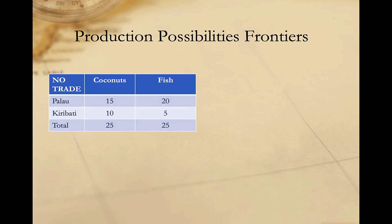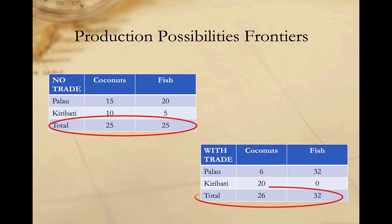Total global production is higher with trade than without it. Without trade, we produced a total of 25 coconuts and 25 fish — 50 units altogether. With specialization and trade, we could produce 20 coconuts and 40 fish — a total of 60 units — if each country specialized in one good. Or, if we wanted to ensure the same amount of fish was not decreased, Palau would give up eight fish to produce six additional coconuts at their opportunity cost of three coconuts for four fish. Global production still increased: 26 coconuts — one more than without trade — and 32 fish — seven more than without trade.